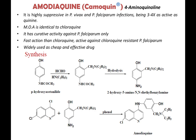Another 4-aminoquinoline is amodiaquine. It is highly suppressive in Plasmodium vivax and Plasmodium falciparum infections, three to four times as active as quinine, with an identical mechanism of action to chloroquine, and is a cheap and effective drug. Synthesis starts with para-hydroxyacetanilide, formylation via a Mannich reaction occurs to form the diethylaminomethyl substituent. Finally, the acetanilide is hydrolyzed to the aniline, which is then treated as an amine to perform metathetical displacement of the 4-chloro group of dichloroquinoline to give amodiaquine.